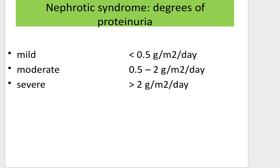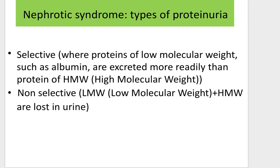Degrees of proteinuria: mild is less than 0.5, moderate from 0.5 to 2, and severe more than 2 grams per meter squared per day. For nephrotic syndrome, severe proteinuria is typical. In terms of proteinuria type, we can name selective proteinuria where proteins of low molecular weight such as albumin are excreted more readily than proteins of high molecular weight, and non-selective when both low and high molecular weight proteins are lost in urine.